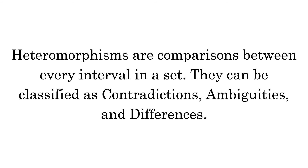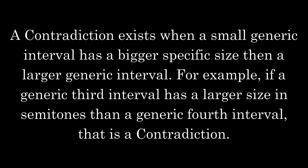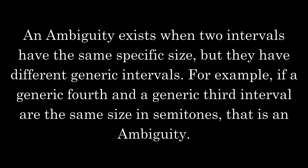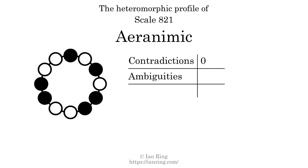Heteromorphisms are comparisons between every interval in a set. They can be classified as contradictions, ambiguities, and differences. A contradiction exists when a small generic interval has a bigger specific size than a larger generic interval — for example, if a generic third interval has a larger size in semitones than a generic fourth interval. The number of contradictions in this scale is zero. An ambiguity exists when two intervals have the same specific size but different generic intervals. The number of ambiguities in this scale is eight.